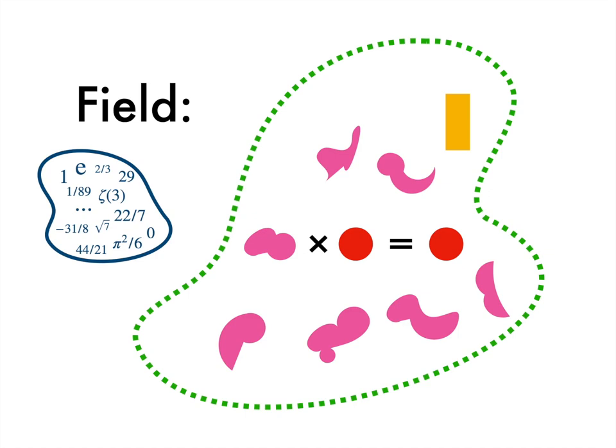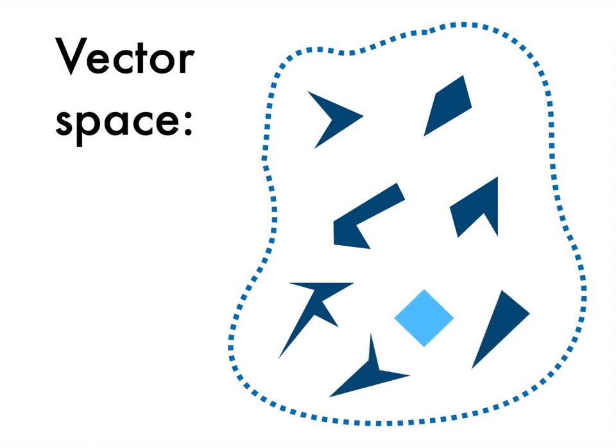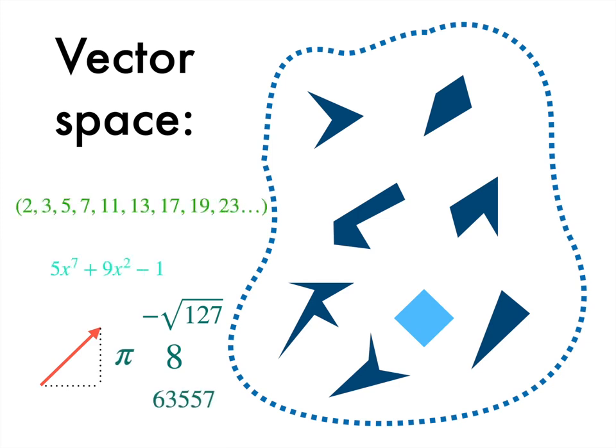So bearing in mind what a field is, let's have a look at a second type of structure. These are called vector spaces. And much like a field, a vector space is a collection of things with a certain structure. The elements in a vector space, we call them vectors. If you've done a bit of high school maths, you probably think of vectors as things with coordinates, much like the arrows from before. But those are just an example of a vector. Vectors can be numbers, or sequences, or even polynomials, and many other things. A vector is just something inside a vector space, and nothing more.